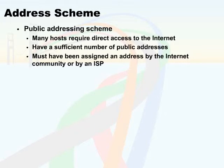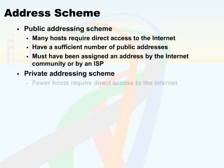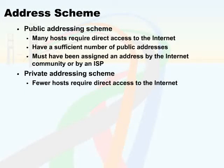So in a lot of cases, you need to go with a private addressing scheme. A private addressing scheme is used when fewer hosts require direct access to the Internet. Normally, these hosts involve the perimeter router or device that provides network address translation at your network perimeter.